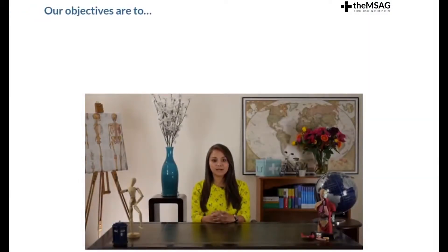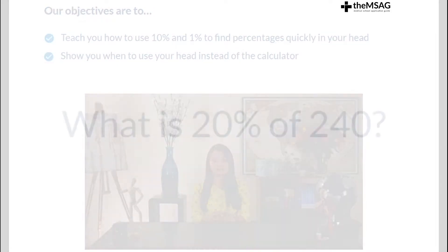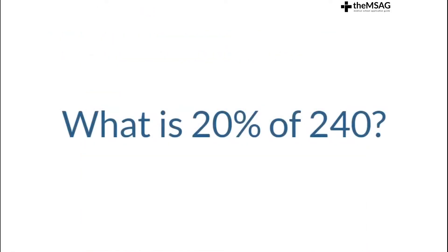Over the next few minutes we will cover how to use 10% and 1% to find percentages quickly in your head, and when to use your head instead of a calculator. What is 20% of 240? If you can answer that in three seconds mentally, you've just saved almost 10 seconds of fumbling with the on-screen calculator you will have access to during the UCAT.